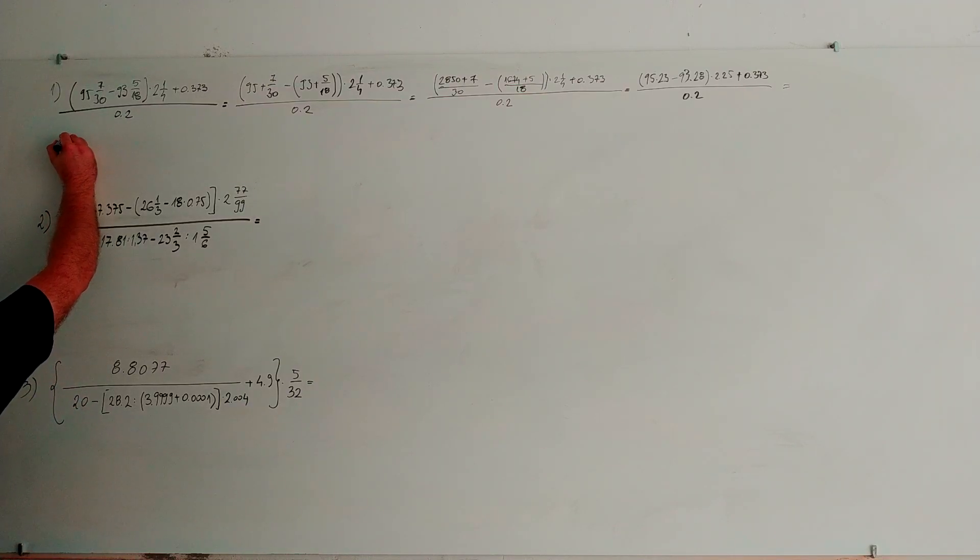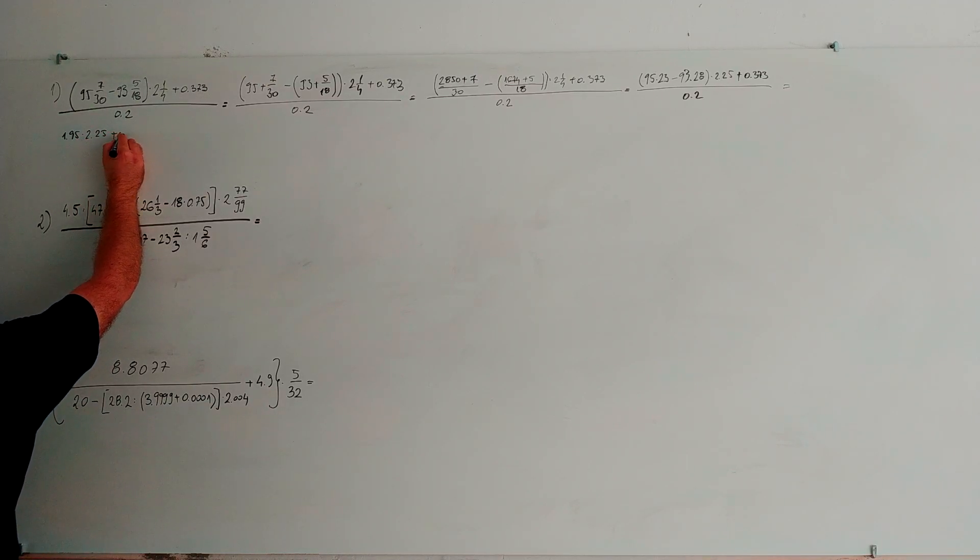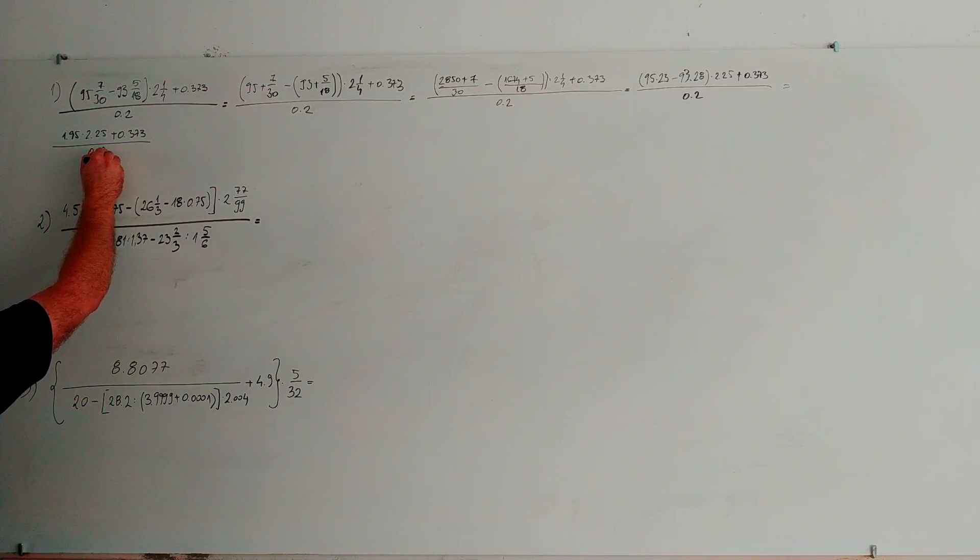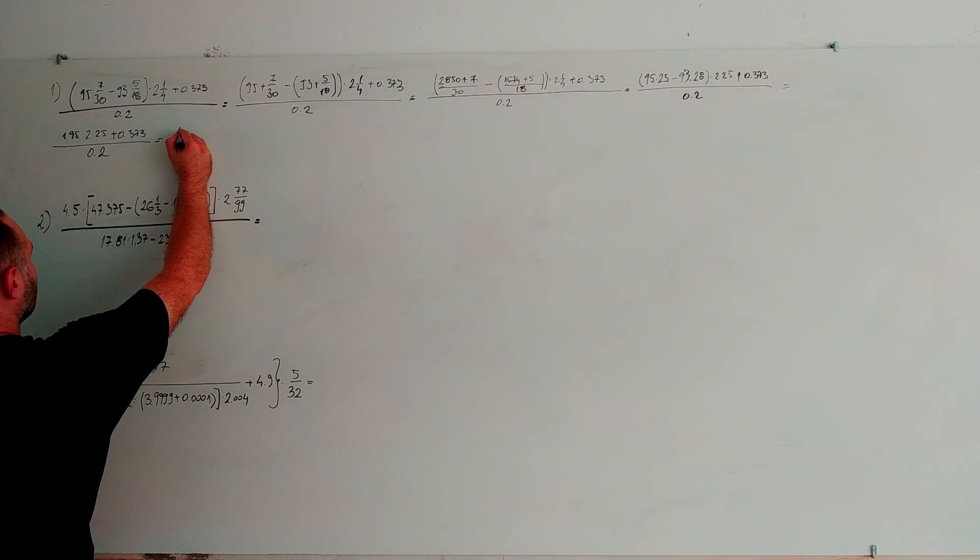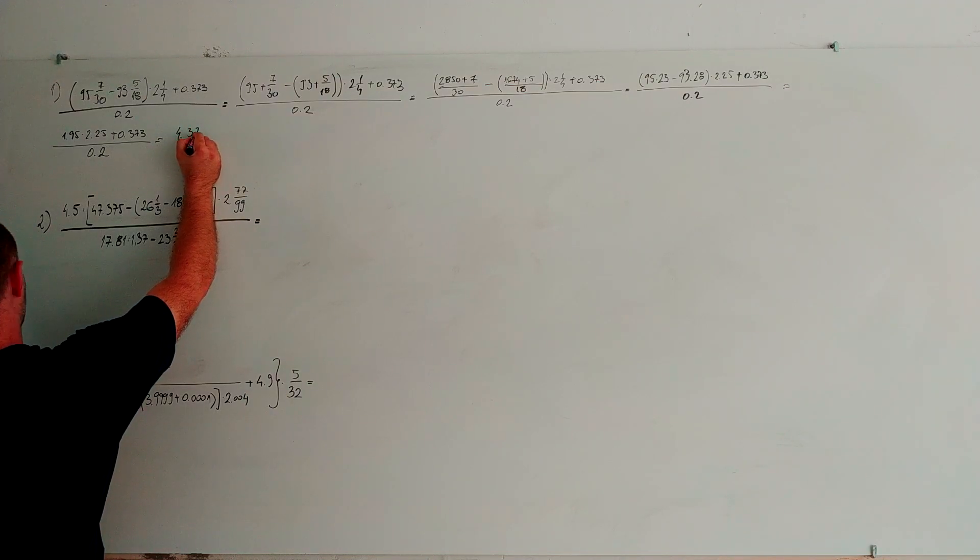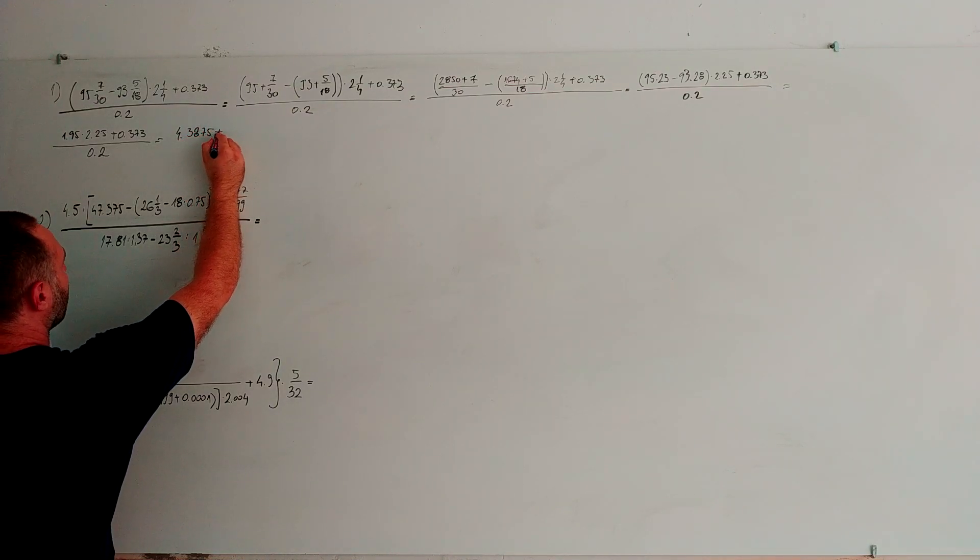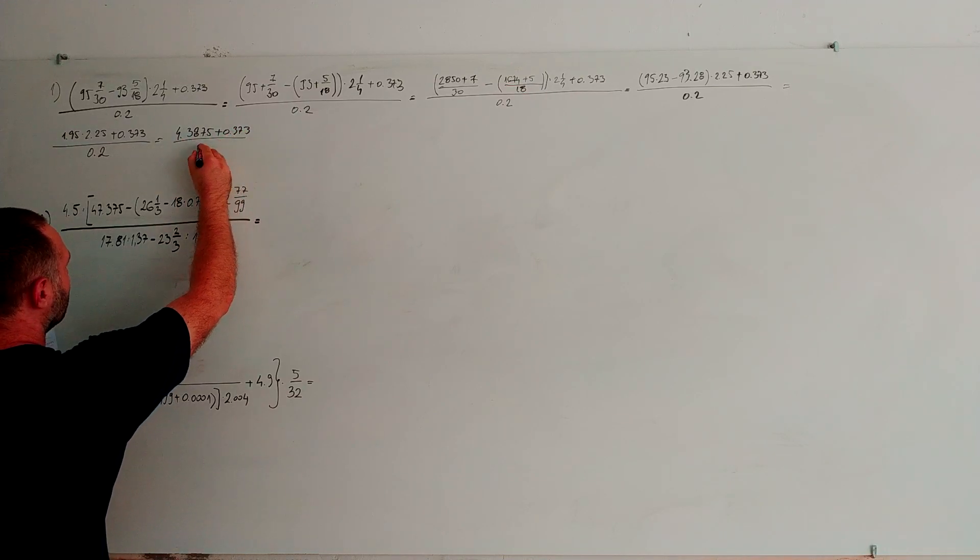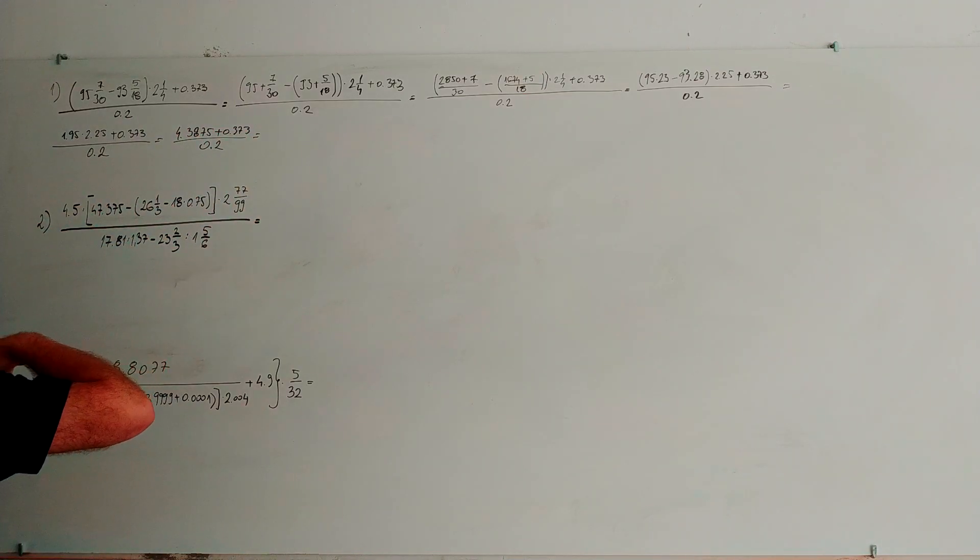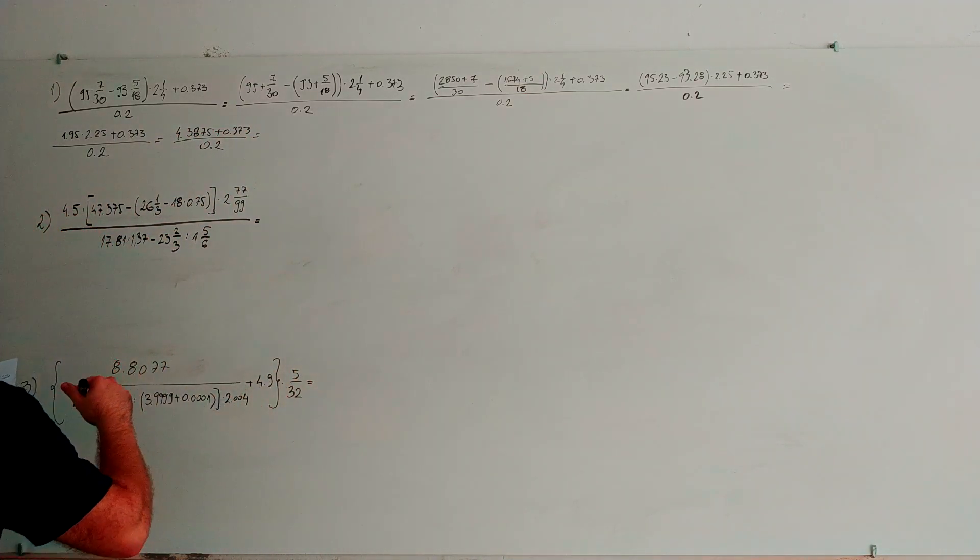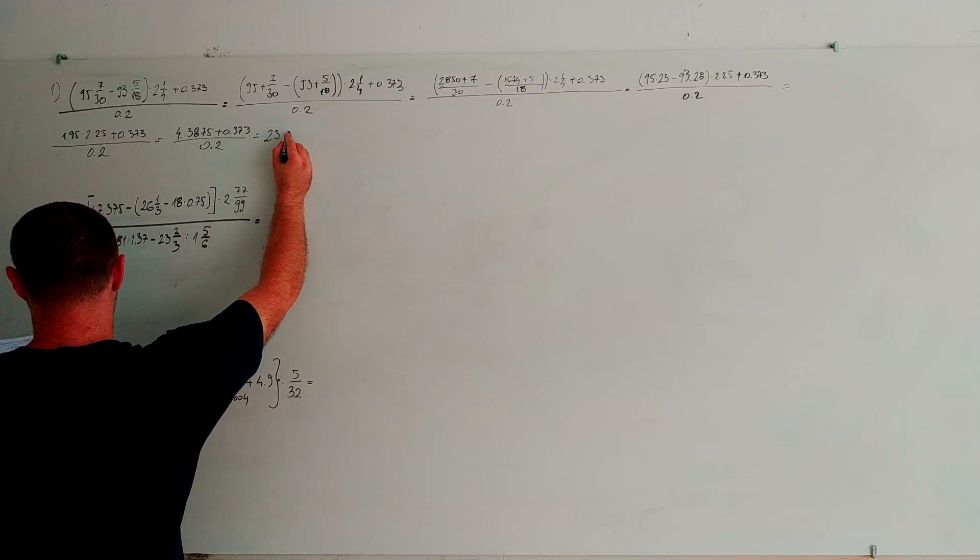Here we have 1.95 multiplied by 2.25 plus 0.373 through 0.2. If we multiply these two numbers, add this number and divide by 0.2, we get 4.4875 plus 0.373 through 0.2. And the result, the final result, is 23.8.